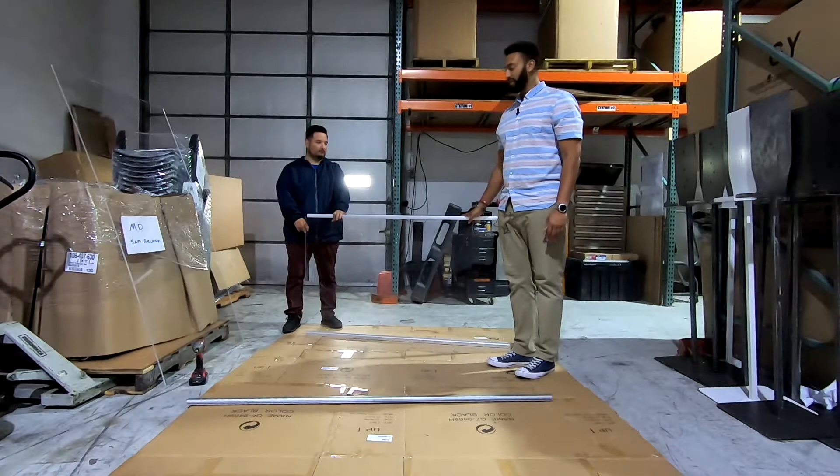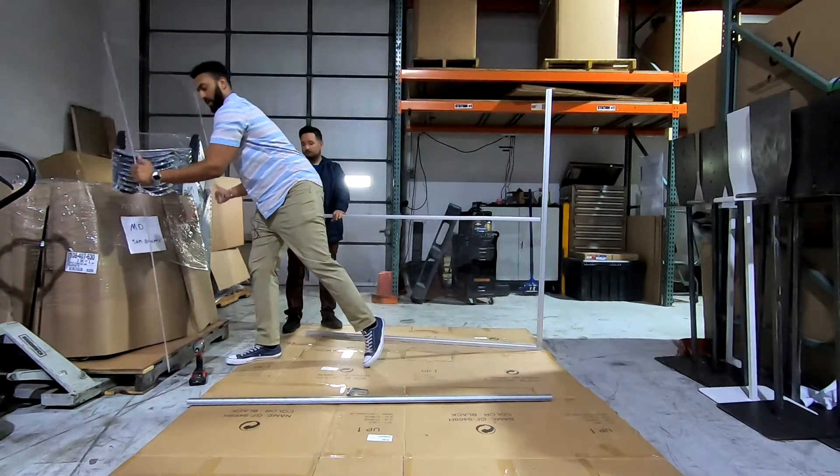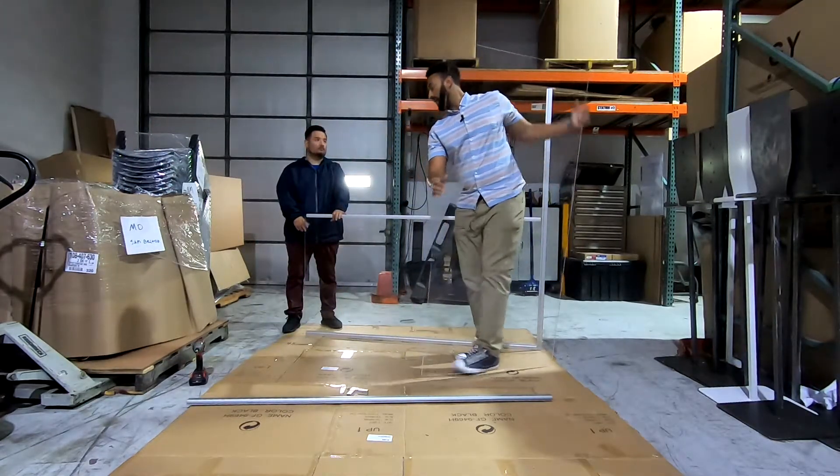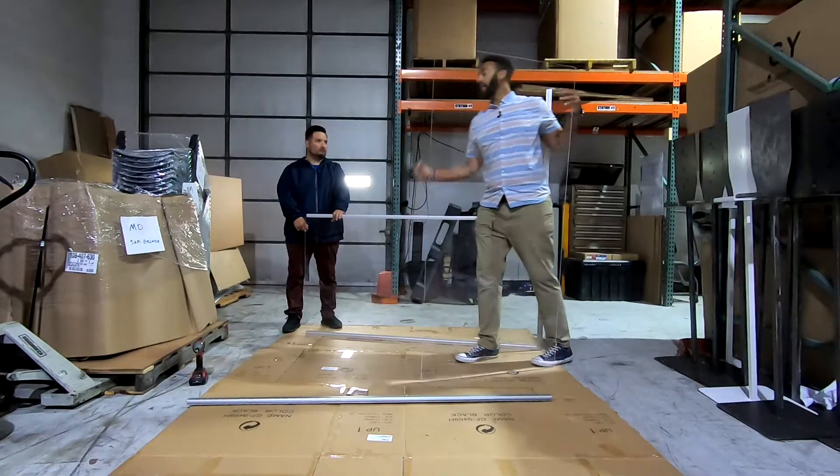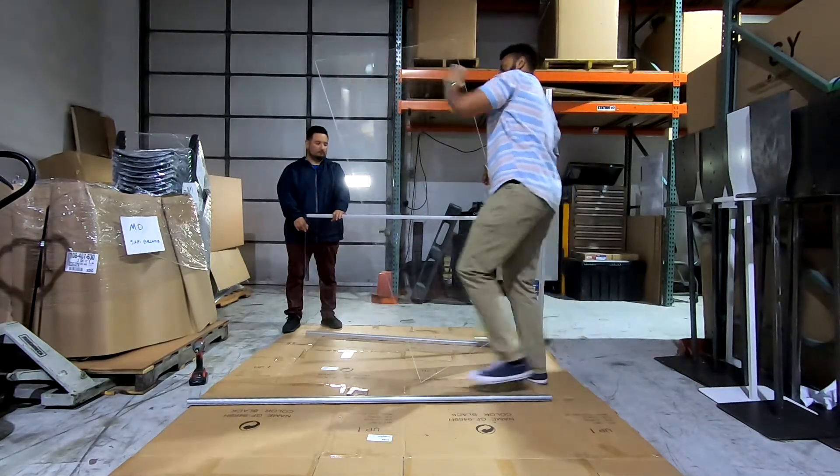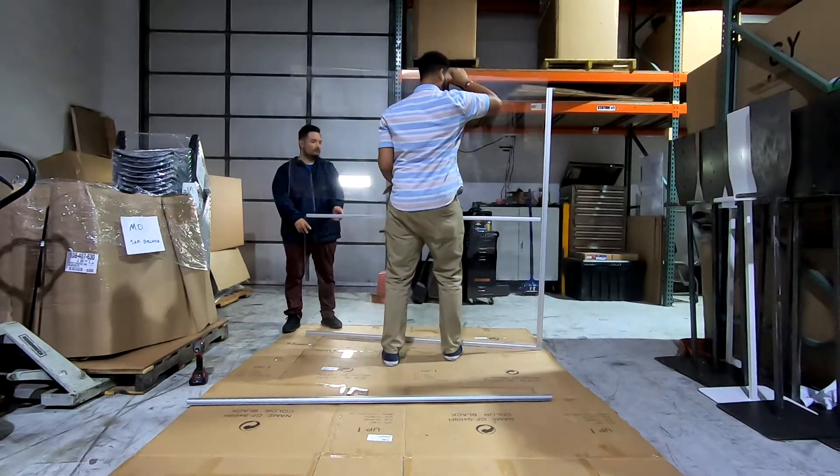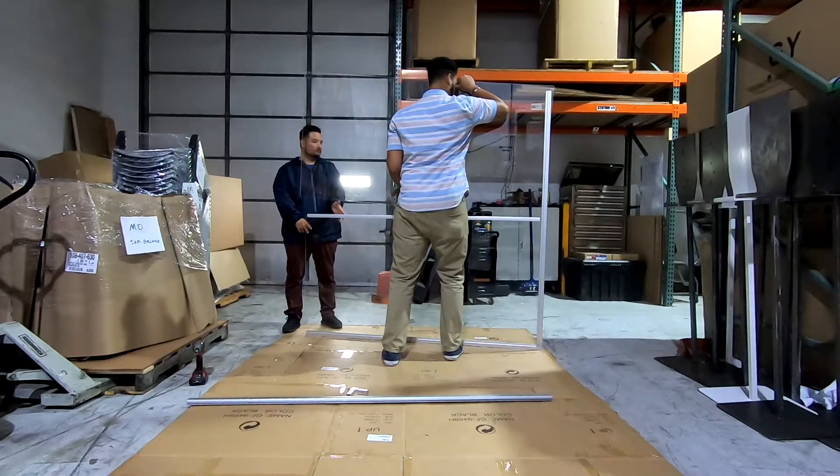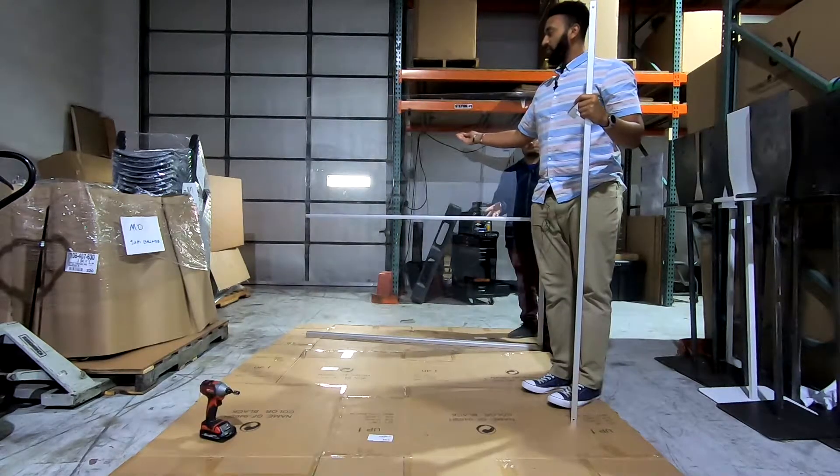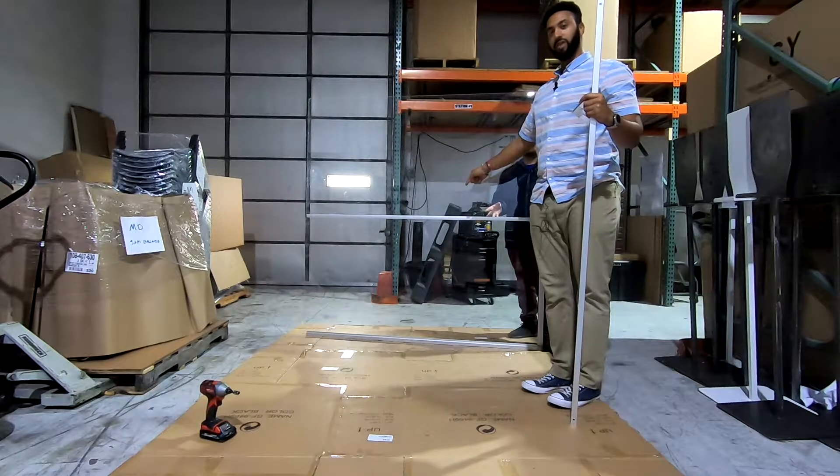After you have your H channel in place, then you will grab your second polycarbonate sheet and put it on top of the H channel inside the frame.